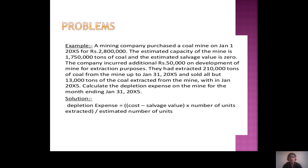Under the declining balance method, we look at one problem. A mining company purchased a coal mine on January 1st for 28 lakhs. The estimated capacity of the mine is 17 lakhs 50,000 tons of coal and the estimated salvage value is zero. The company incurred additional rupees 50,000 to develop the mine for extraction. They extracted 21 lakhs 20,000 tons of coal from the mine up to January 31st and sold all but 13,000 tons.